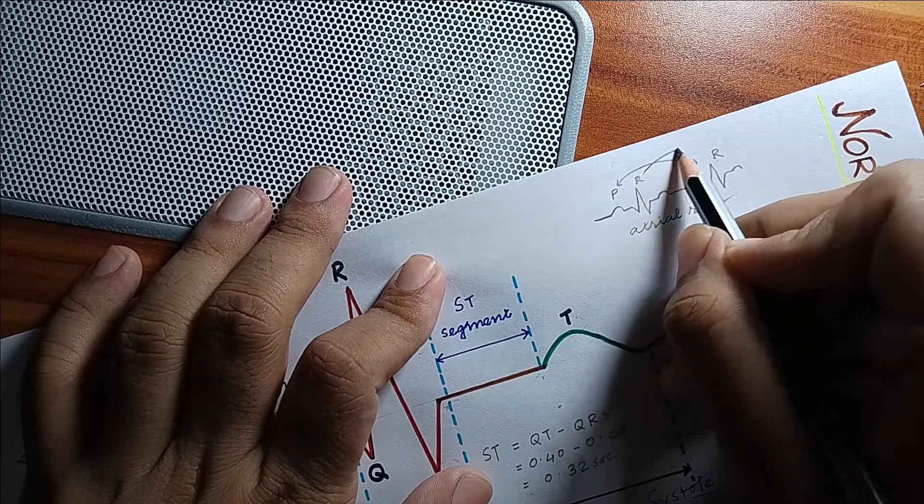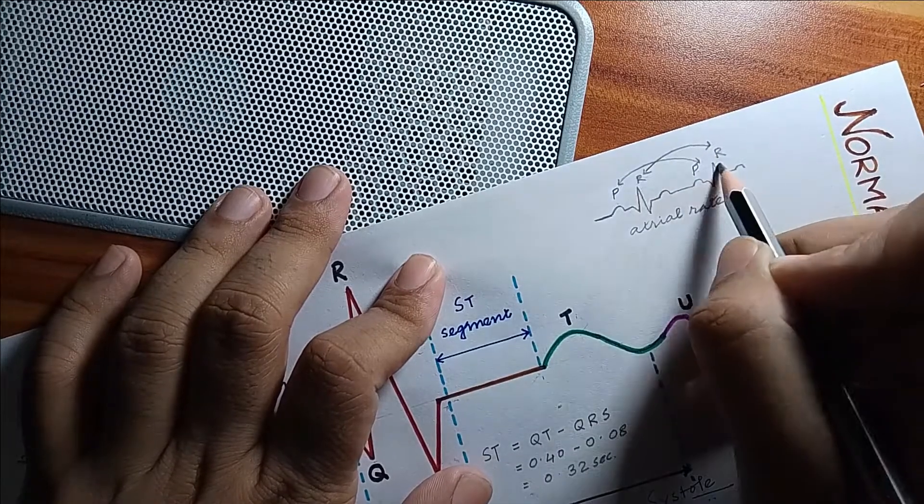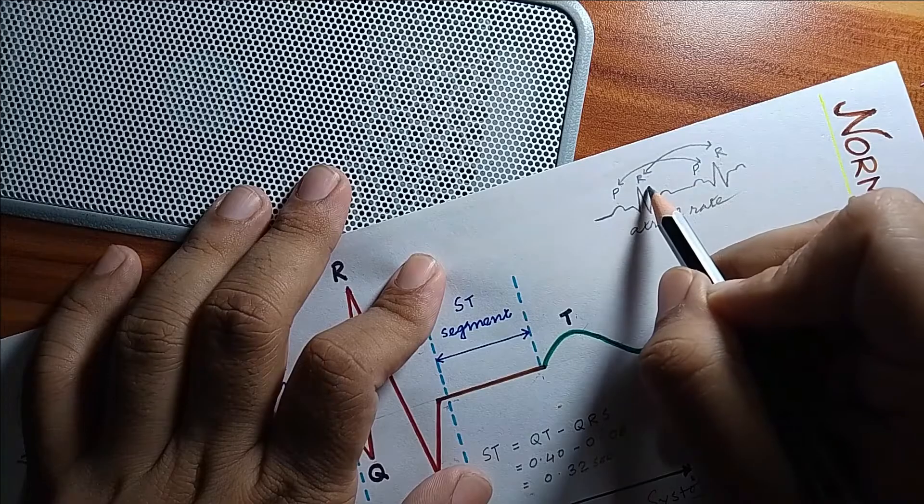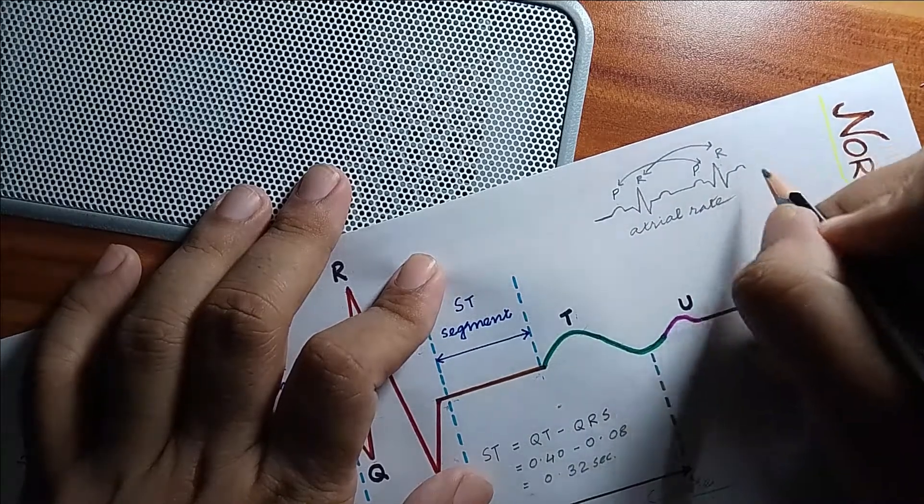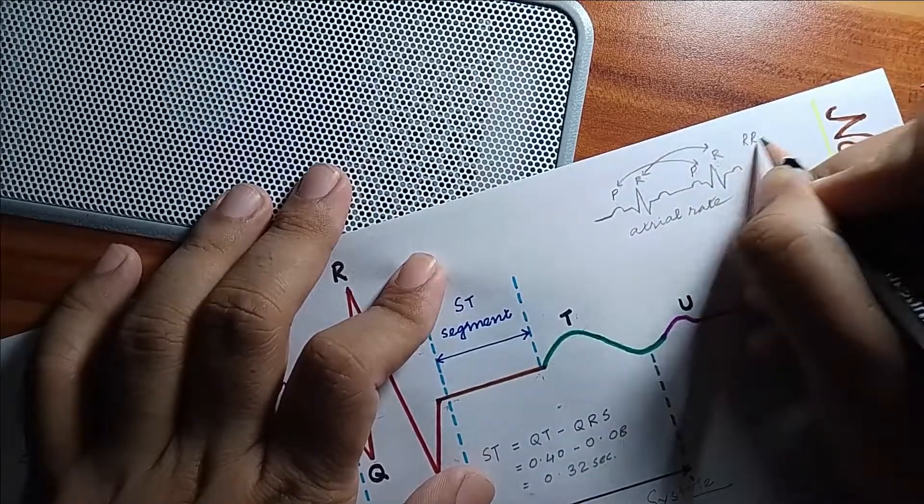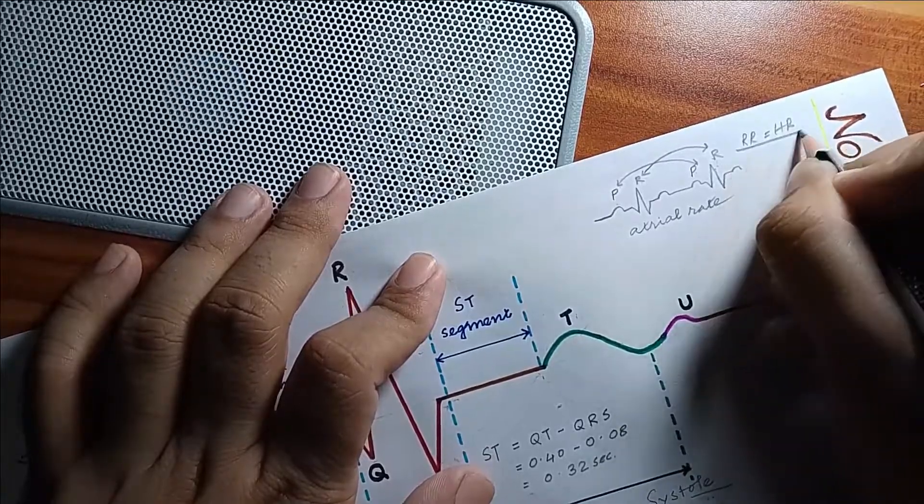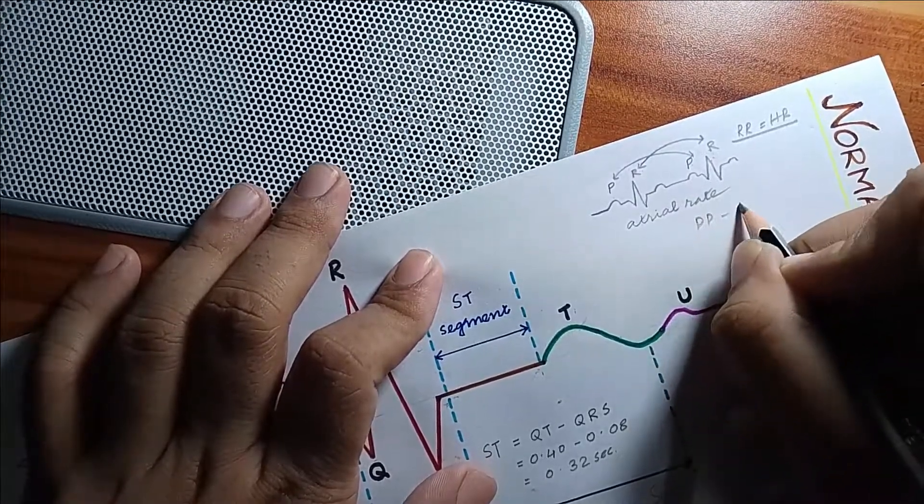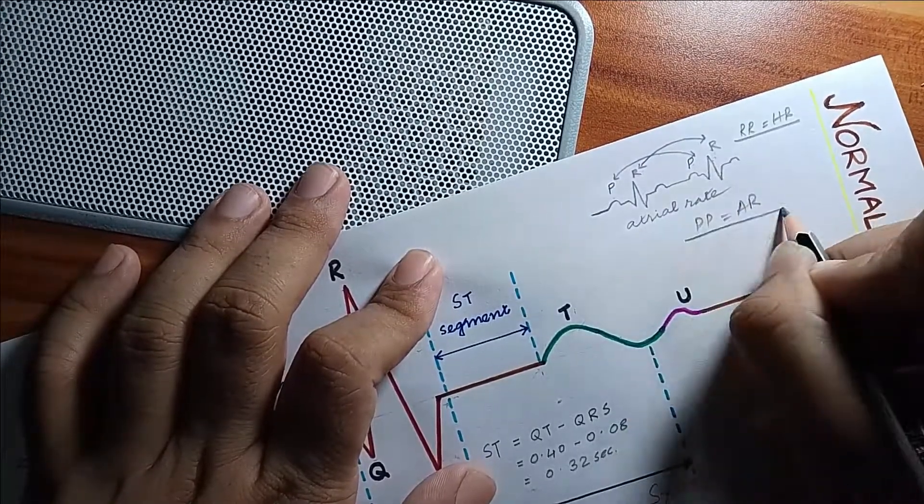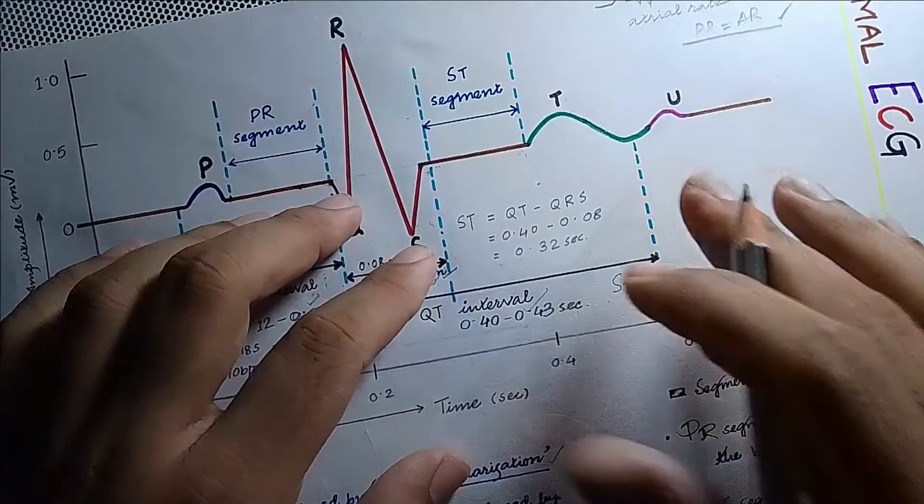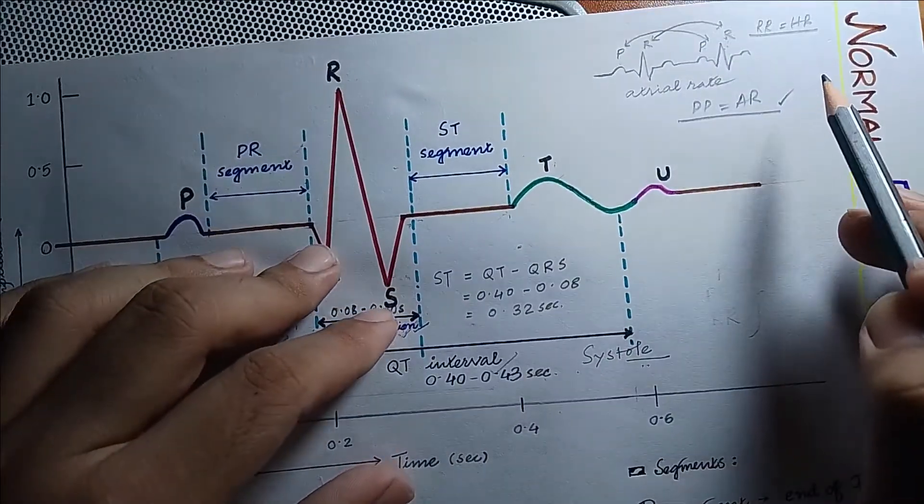The RR interval is measured for calculating the heart rate. RR is equals to HR, and PP is equals to AR. So remember that. In the next video I will discuss about some abnormal ECGs.